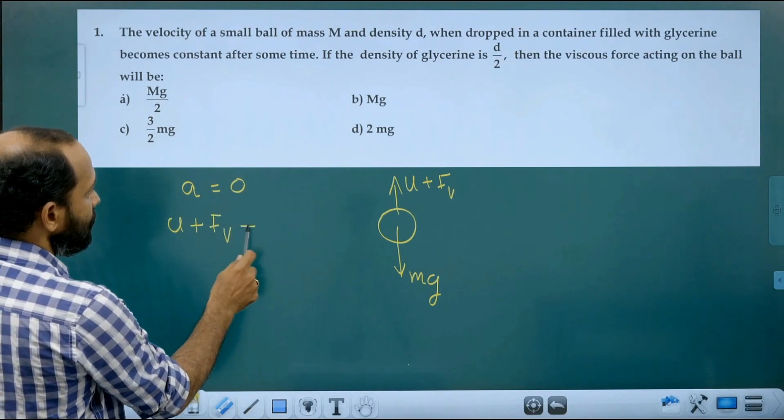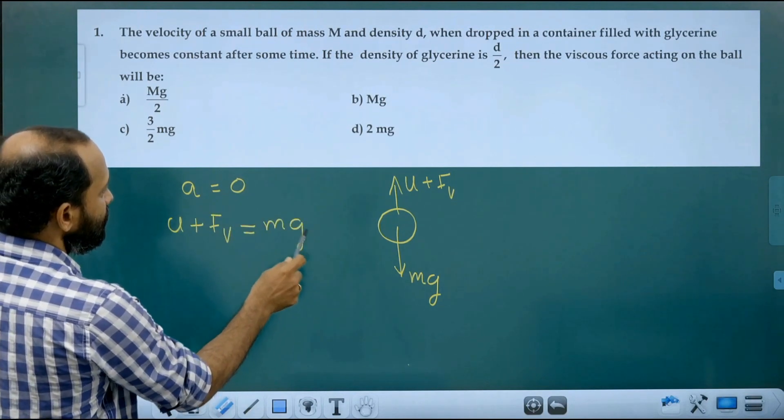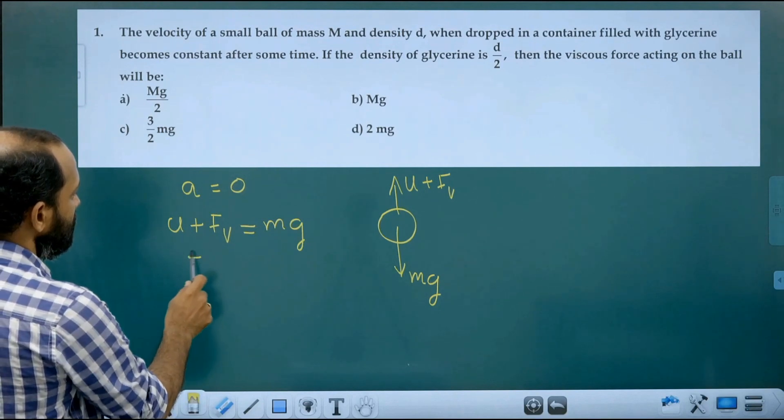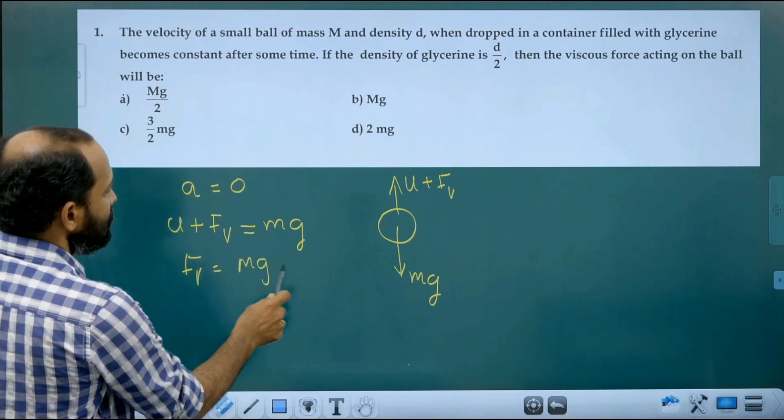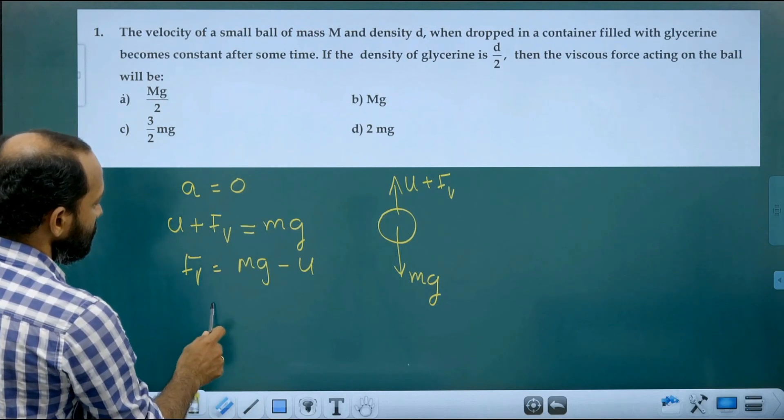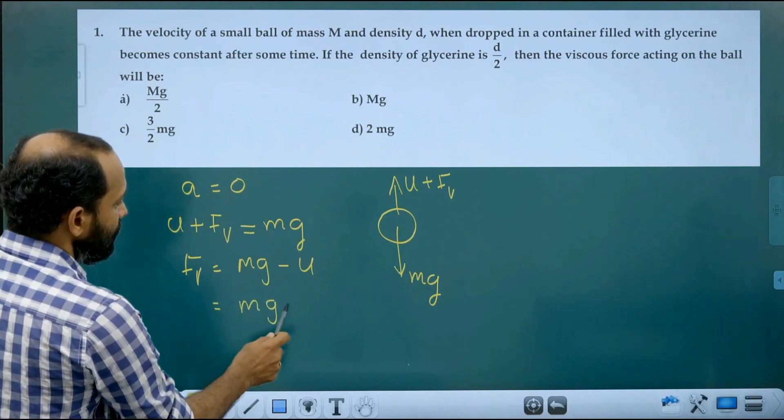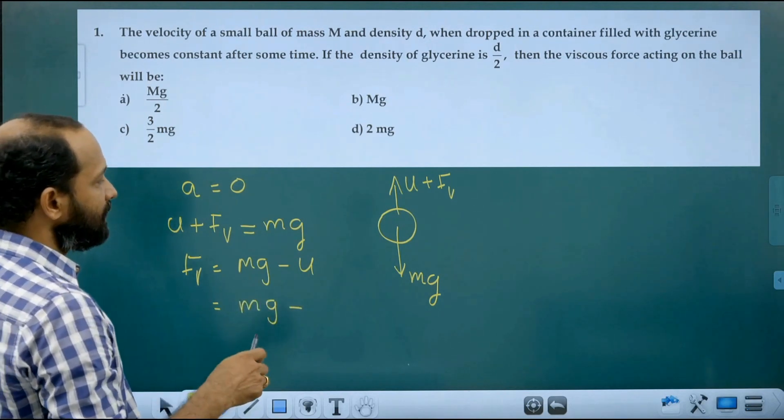u plus Fv is equal to mg, so that Fv viscous force is equal to mg minus u. That is equal to mg minus u, that is upthrust.